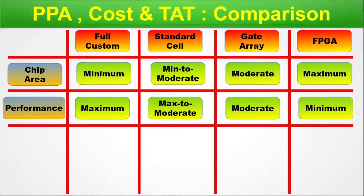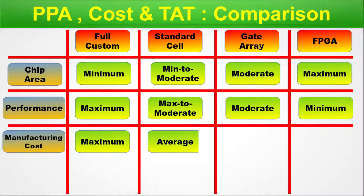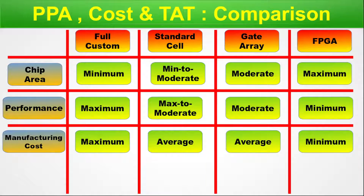Next parameter: manufacturing cost. For full custom, it is maximum — requiring maximum human hours, driving up production cost. For standard cell, it is average. For gate array, it is also average. For FPGA, it is minimum — because it is a ready board programmed only by the end user. Standard cell and gate array lie somewhere in between the two extremes.